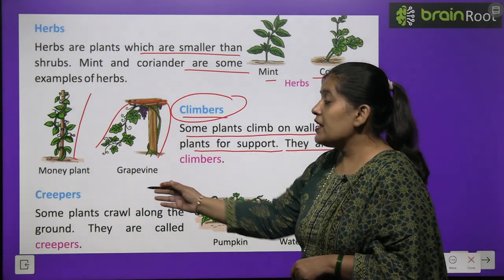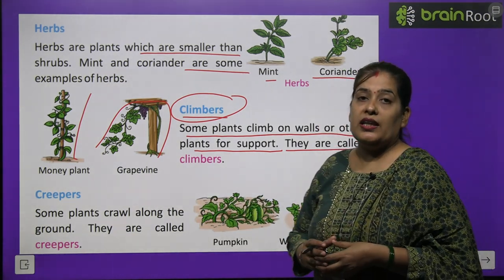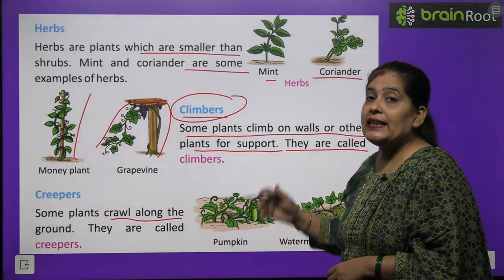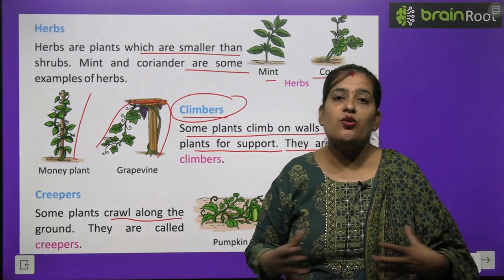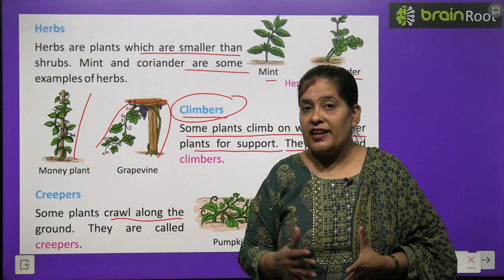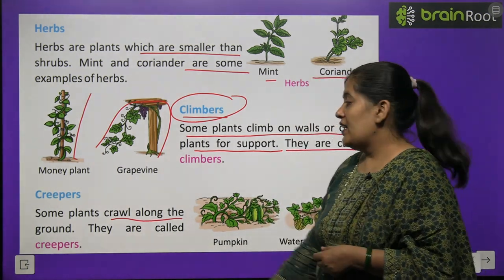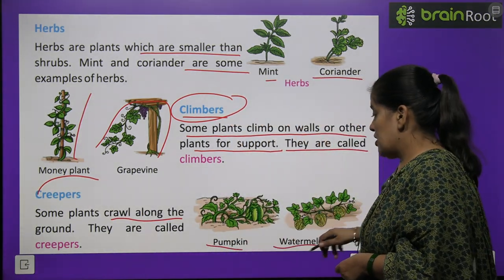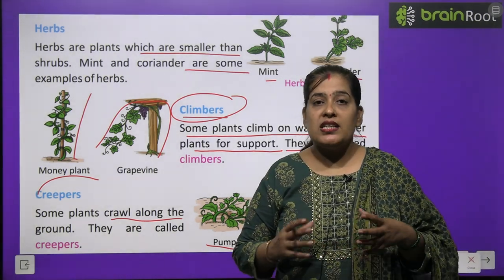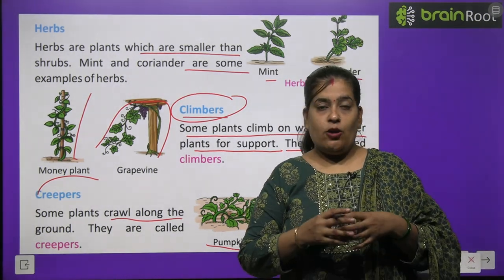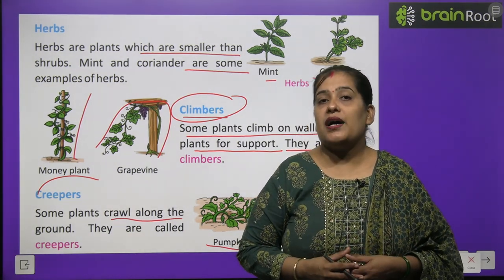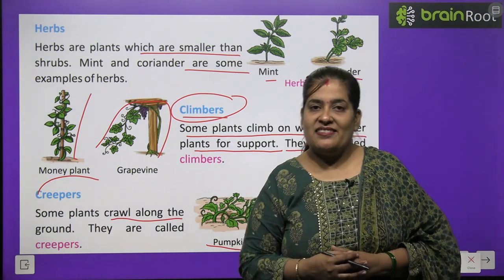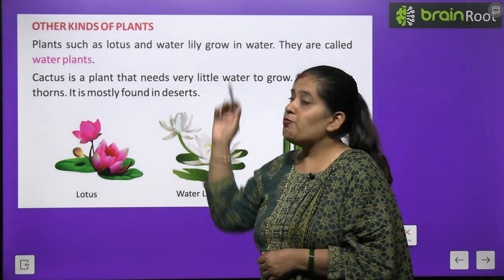Now we will learn about creepers. Creepers क्या होते हैं? Some plants crawl along the ground. They are called creepers. कुछ पौधे जमीन पर ही फैलते हैं, जमीन पर ही रेंगते हैं — इन्हें हम creepers कहते हैं। जैसे pumpkin और watermelon यानी तरबूज — इसकी बेल जमीन पर ही फैलती है और इन पर जो फल लगता है वो बहुत भारी होता है।